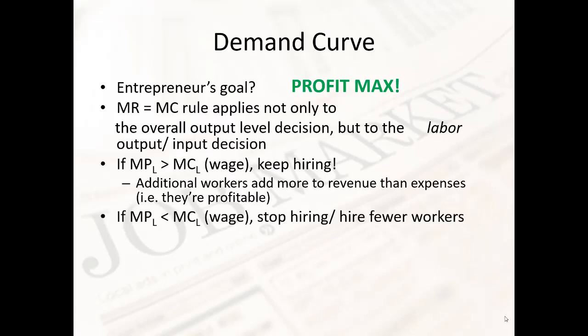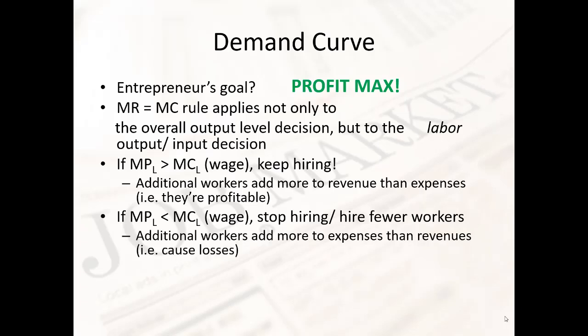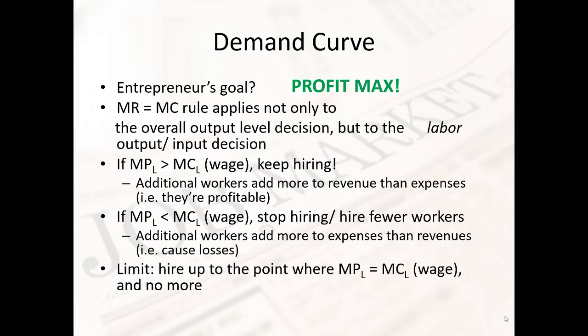If you go too far, marginal product of labor might be less than the marginal cost of labor, and at that point you stop hiring or cut back. Additional workers add more to expenses than revenues. So the logical ending point is you hire up to the point where the marginal product of labor equals the marginal cost of labor, or the wage, and no more. In a competitive market, wage will be driven to the marginal product of labor.